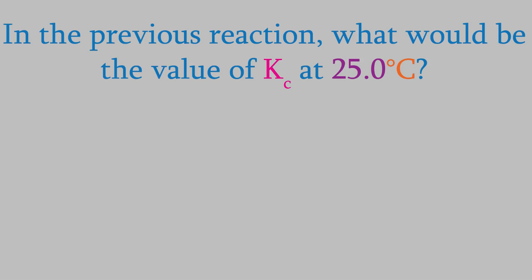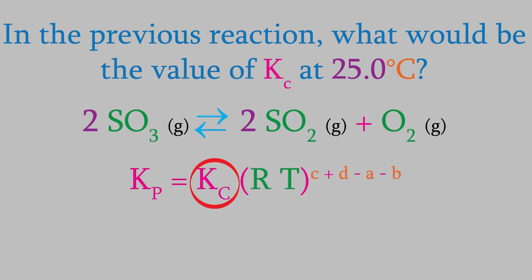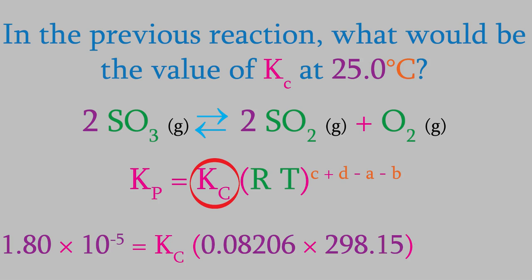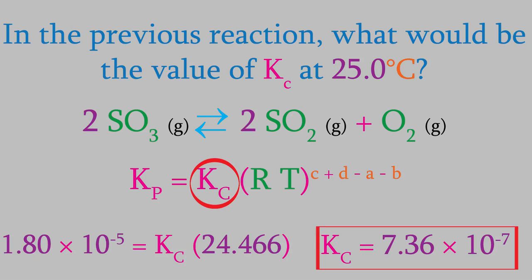For example, in the previous problem, we calculated the equilibrium constant using pressures. What would be the value of Kc at 25.0 degrees Celsius? Here's that reaction again. We're looking for Kc, so we'll plug in all the other data. We had 1.80 times 10 to the minus 5 for Kp, and our temperature is 298.15 Kelvin. The exponent will be all the product coefficients minus all the reactant coefficients. So that's 2 plus 1 minus 2, for a total exponent of 1. That gives us 24.466 in the parentheses on the right side. When we solve for Kc, we get 7.36 times 10 to the minus 7. Notice that that's significantly different from the Kp we got.